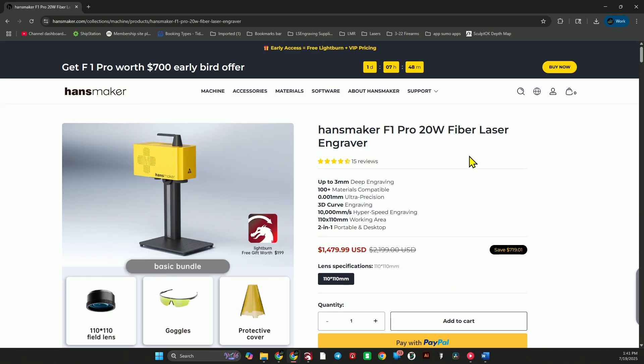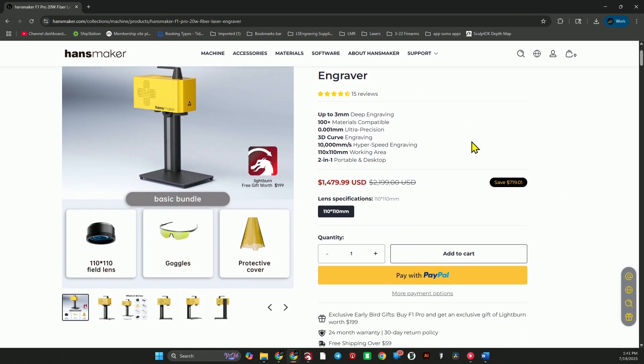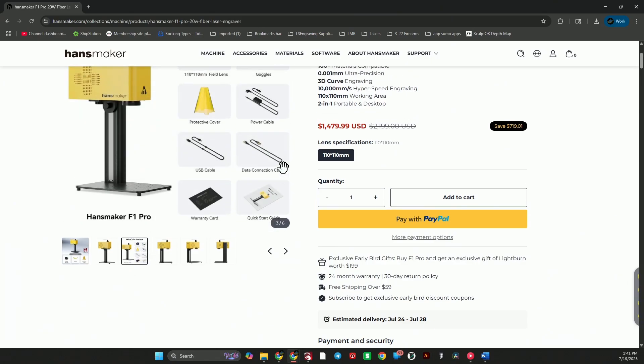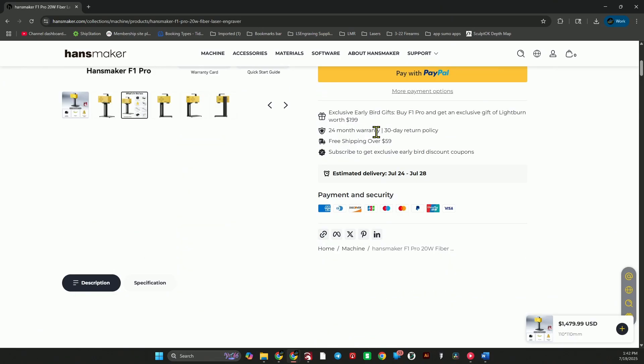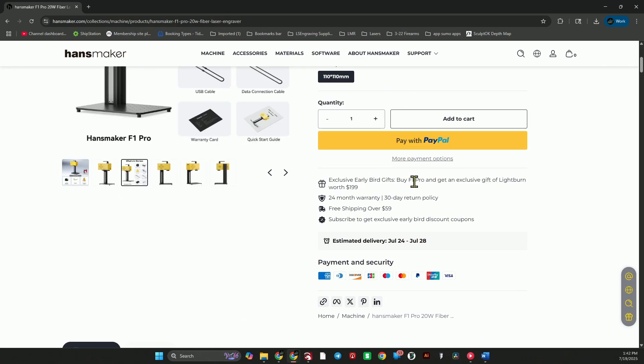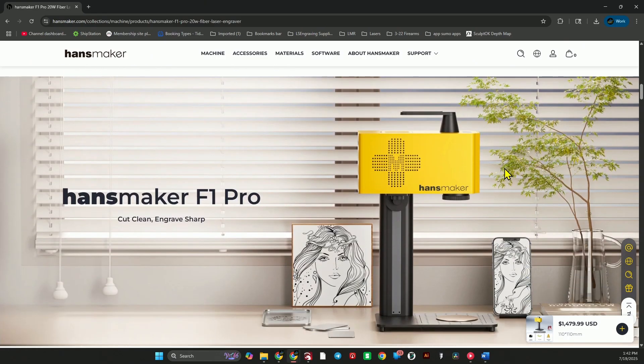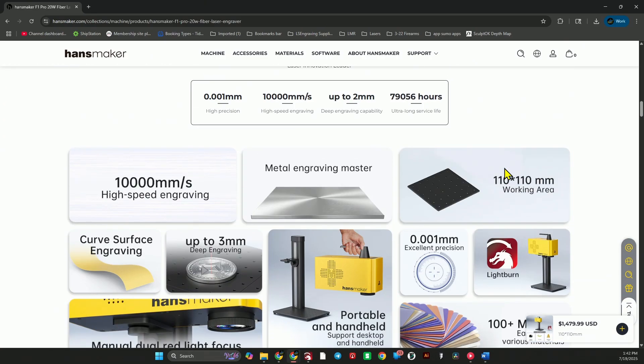I'll have a link in the description. An affiliate link. If you're wanting to check one of these out. Right now current price is $1479. 110 lens, goggles, and the cover. That's what comes with it. 24 month warranty. So, you have a two year warranty. And a 30 day return policy. And you buy it. And you get Lightburn Pro.